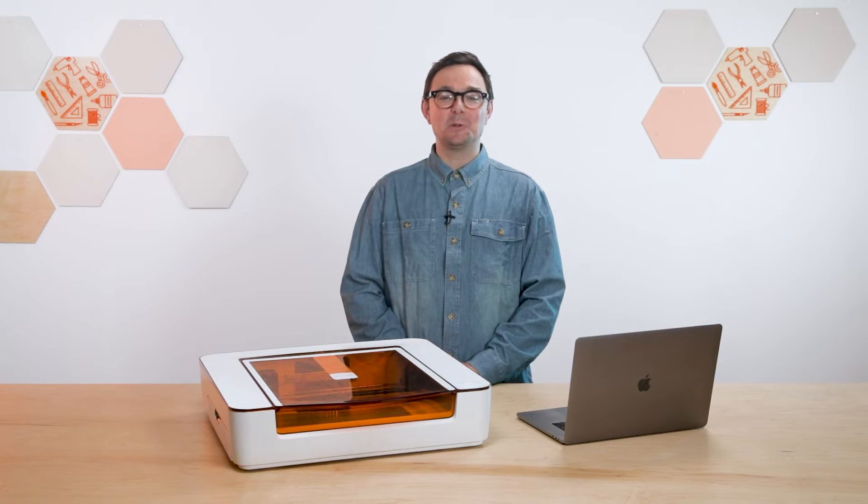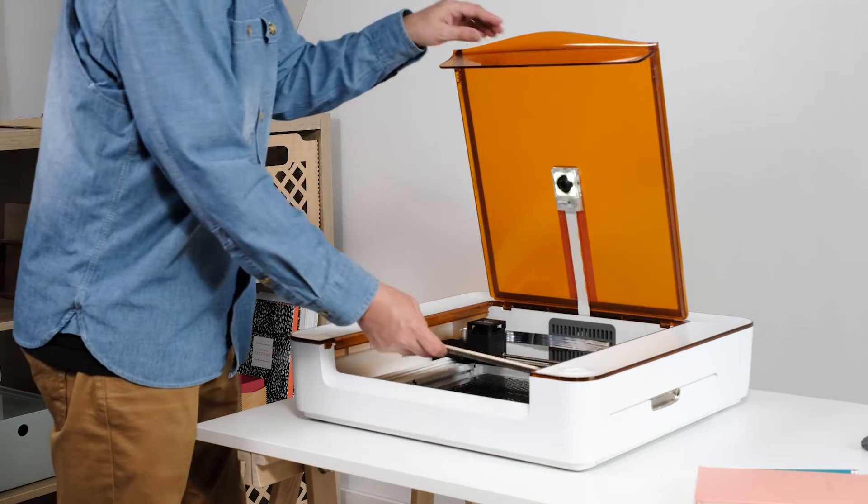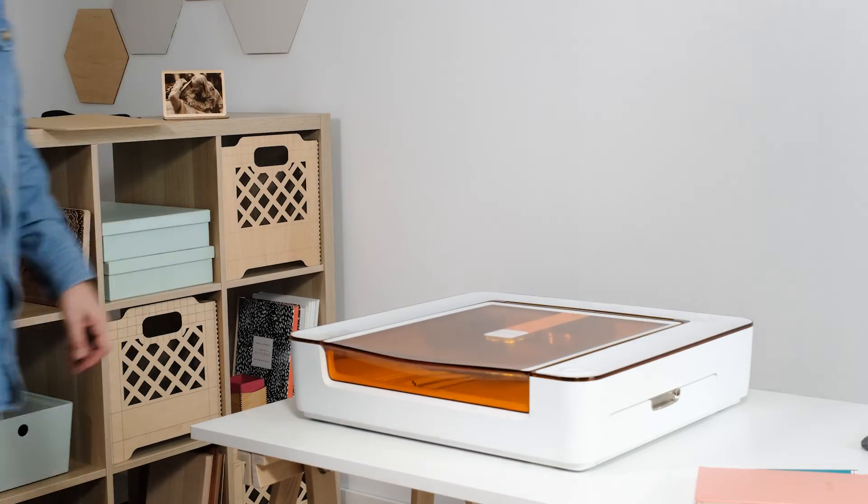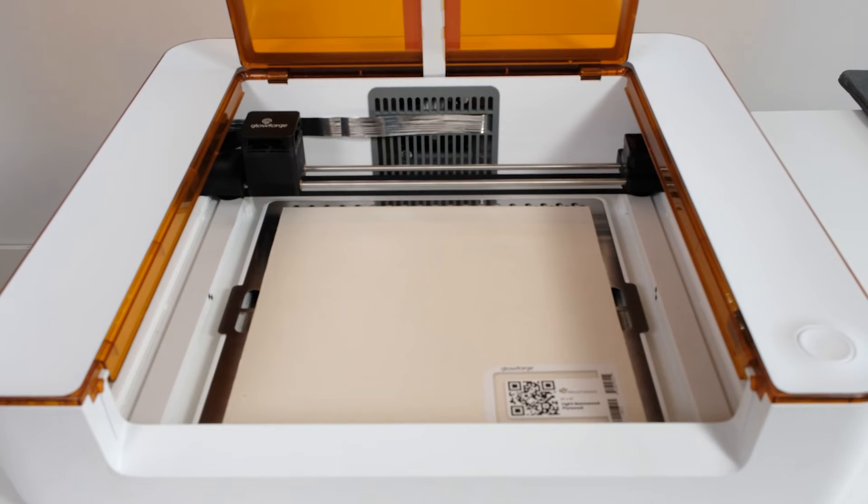Now's a good time to put your material into your Aura. Open the lid, take a sheet of light basswood plywood and place it into the printer. It should lay flat against the cutting tray with the QR code facing up.